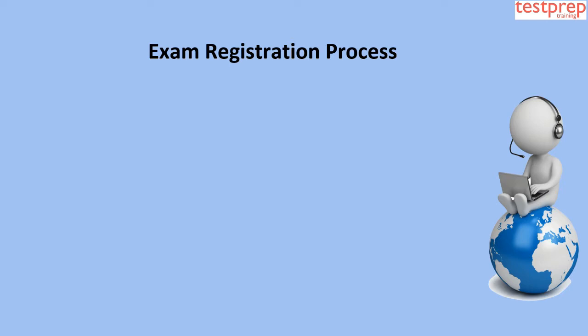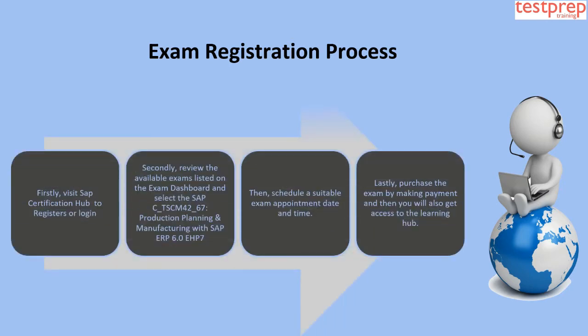As long as you have an internet connection and a laptop or desktop computer with a webcam, you can take the exam remotely. To register, visit the SAP Certification Application Hub, review the available exams on the dashboard, and select the C_TSCM42_67 Production Planning and Manufacturing with SAP ERP 6.0 EHP 7 exam. Then schedule a suitable appointment date and time.